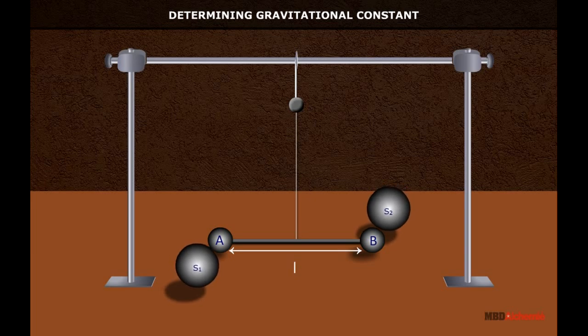The larger spheres S1 and S2 attract smaller spheres A and B by equal and opposite gravitational force. It gives rise to gravitational torque, F into L.